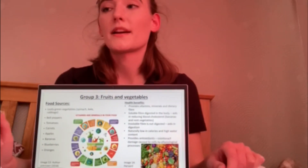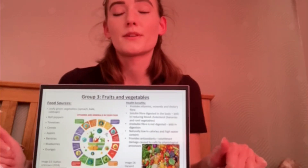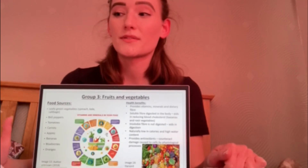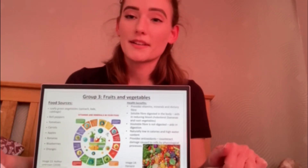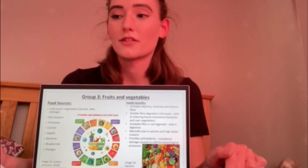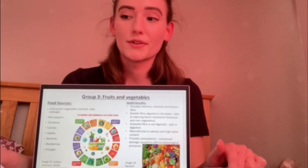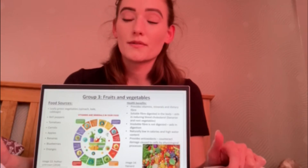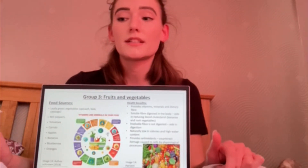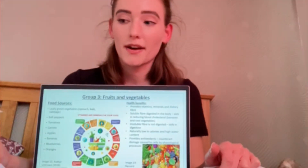In group three we have fruits and vegetables, which can include leafy green vegetables, bell peppers, tomatoes, carrots, apples, bananas, blueberries and oranges. It's recommended that we have at least five portions of fruits and vegetables from a variety of options, as they all vary in macro and micronutrient content and are naturally low in calories with a higher water content. Antioxidants are also present in many foods within this group; they are substances that can counteract damage to cells caused by physiological processes, and foods in this group also provide a great source of dietary fibre.